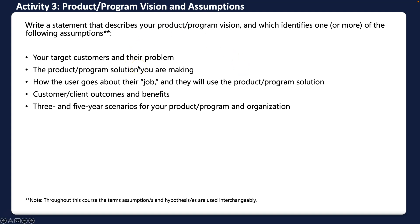In Activity Three, you'll work with assumptions. This slide is about writing a statement that describes your vision for the future and identifies one or more assumptions. Throughout the course, you'll hear the terms assumptions and hypotheses used interchangeably — a hypothesis is essentially a hunch. You don't need to address all five assumption types listed; just zero in on the one most relevant and work from there.